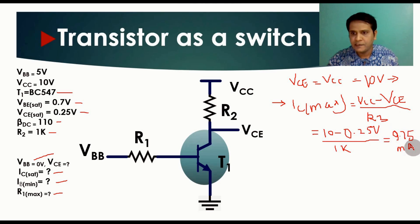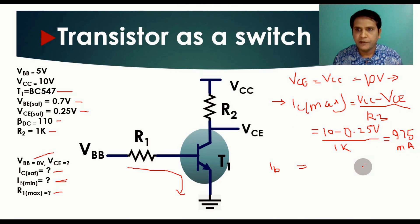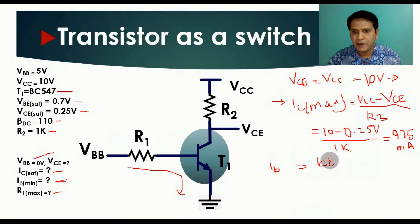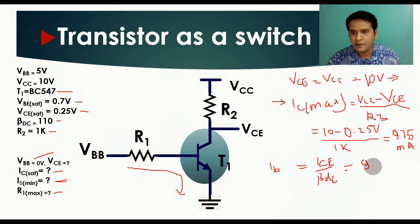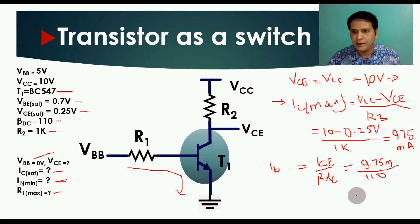Solving that gives IC sat equals 9.75 milliampere. Now we find IB min: IB min equals IC sat divided by beta DC, which is 9.75 milliampere divided by 110.